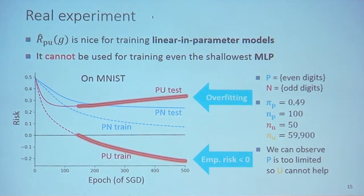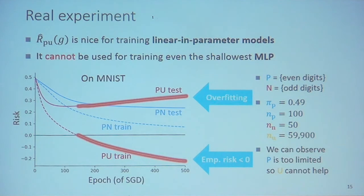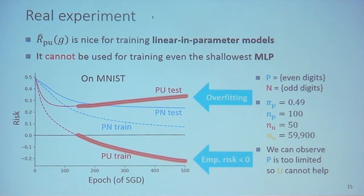Experimentally, we found that the unbiased risk estimator in PU learning is very nice for training linear-in-parameter models including linear input models. However, it cannot be used for training even the shallowest multi-layer perceptron. We can see this in the figure: the test error of supervised learning keeps decreasing, but for PU learning, the test error drops quickly at the beginning of training, then immediately increases and never goes down again.